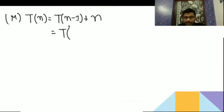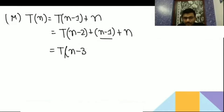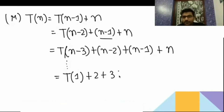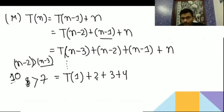This gets reduced by 1, then plus n. T(n-1) will be T(n-2) + (n-1) + n. T(n) keeps reducing: T(n-3) + (n-2) + (n-1) + n. It will keep on going like this until T(1), so you get 2 + 3 + 4... If n = 10, n-2 = 8, n-3 = 7, and so on.